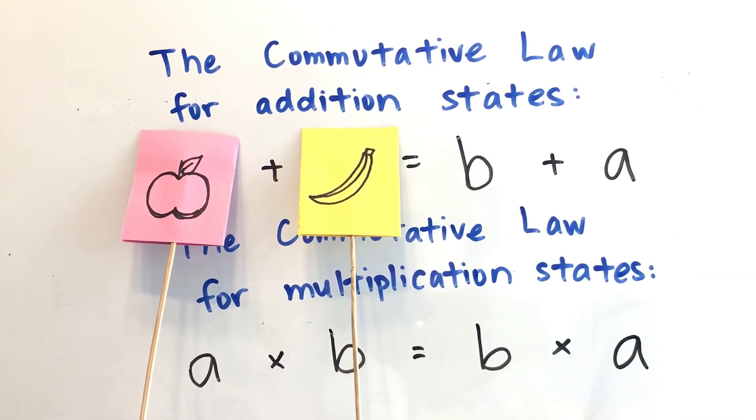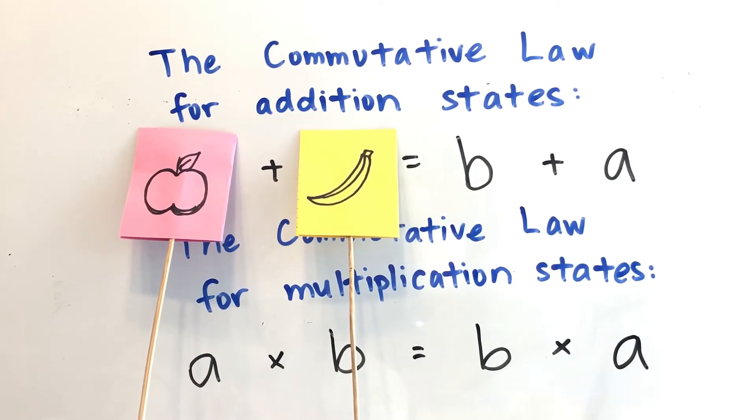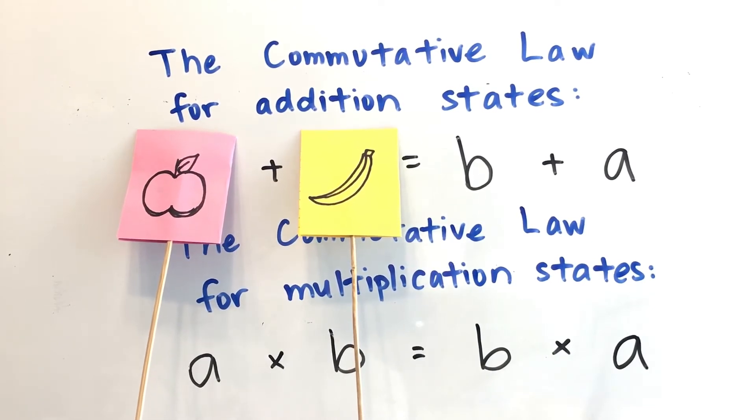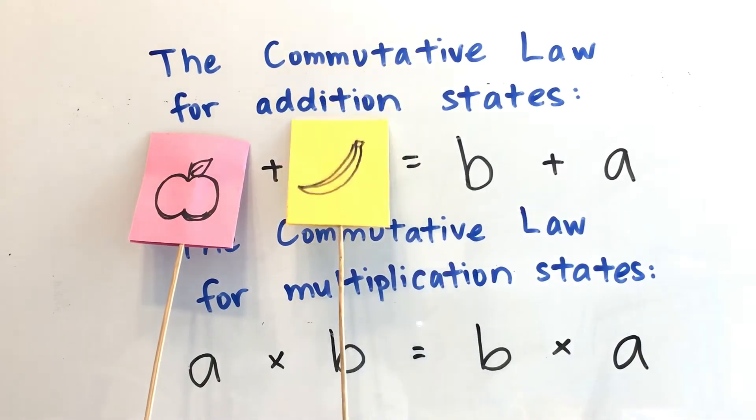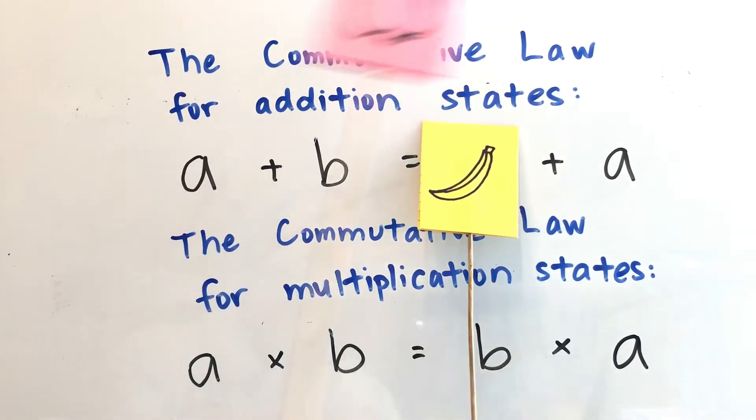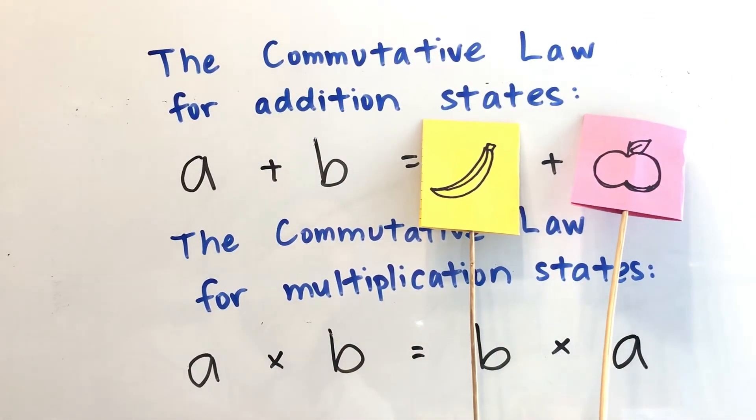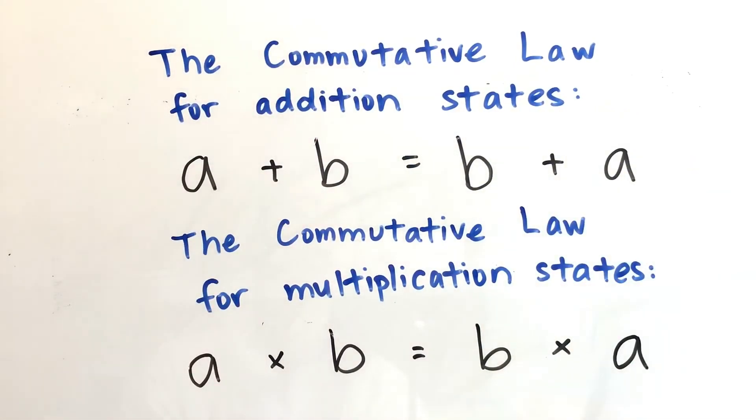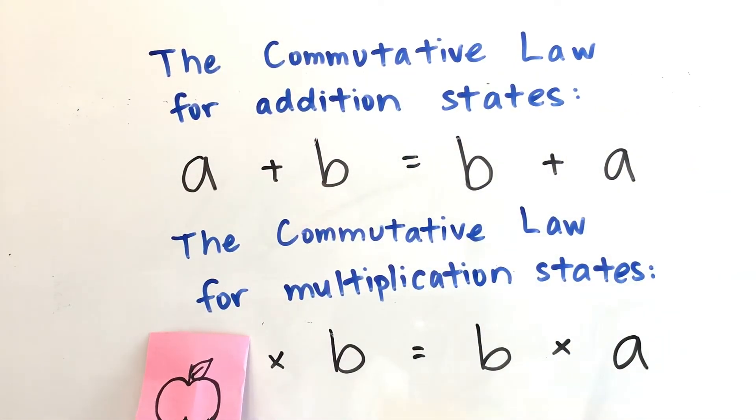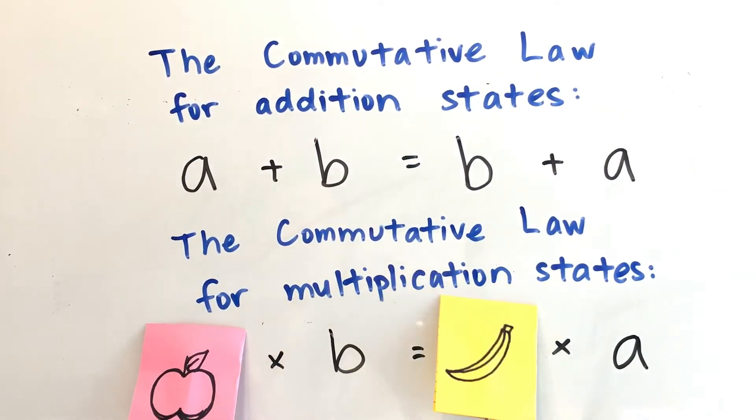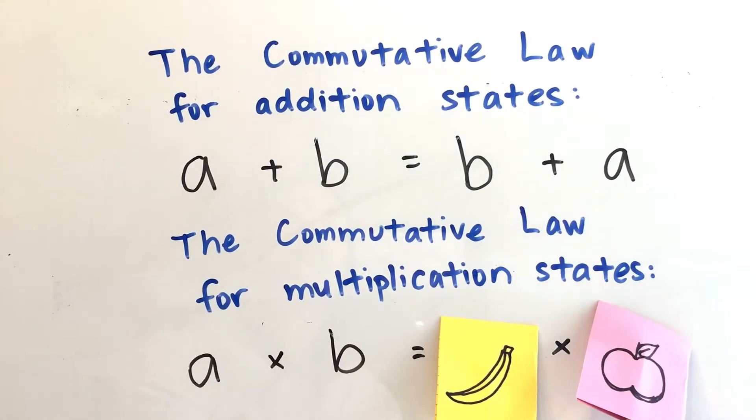So I like to remember it like this also. The commutative law for addition states, apples plus bananas equals bananas plus apples. And the commutative law for multiplication states, apples times bananas equals bananas times apples.